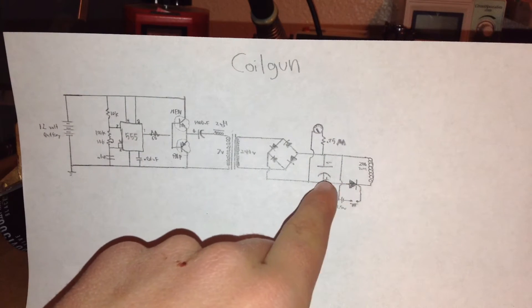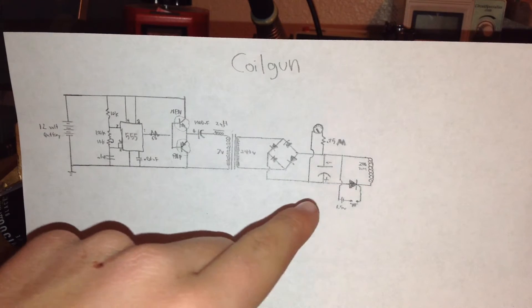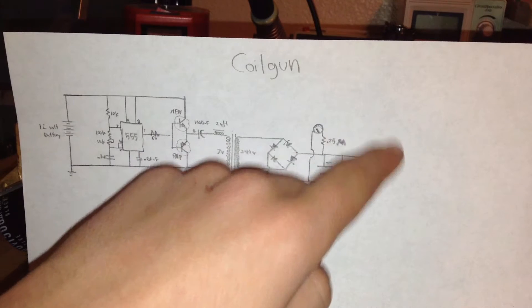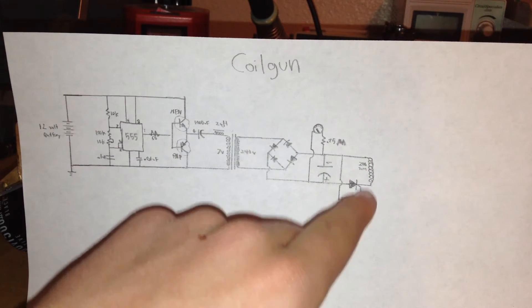Now once you know the capacitors are charged, this triac can be used to let the full power flow through the solenoid that you built to accelerate the magnetic projectile.